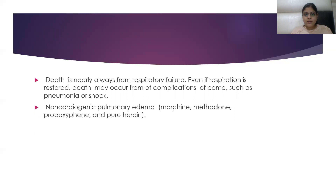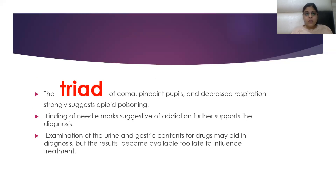Non-cardiogenic pulmonary edema can also occur due to morphine, methadone, propoxyphene, and pure heroin. The main causes of death in morphine poisoning include respiratory failure, non-cardiogenic pulmonary edema, coma, pneumonia, and shock. The classic triad of signs of morphine poisoning is: combined coma, pinpoint pupils, and depressed respiration.